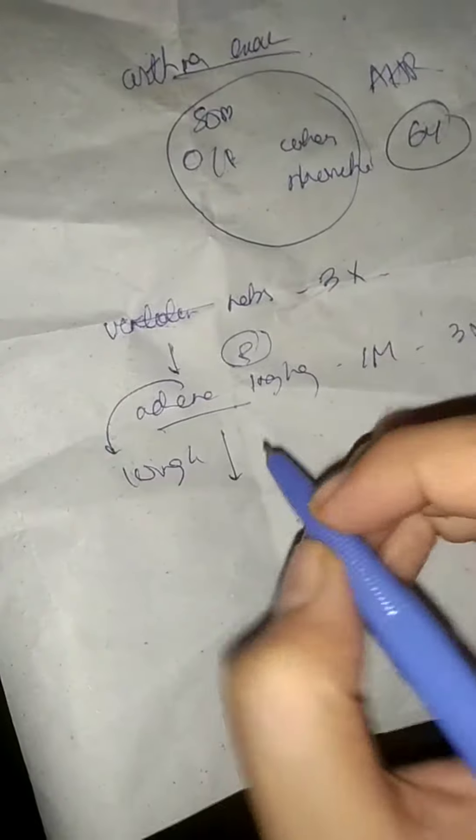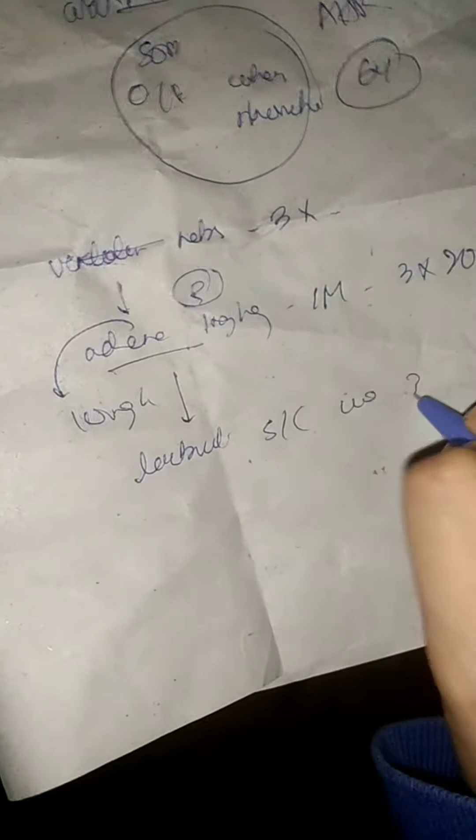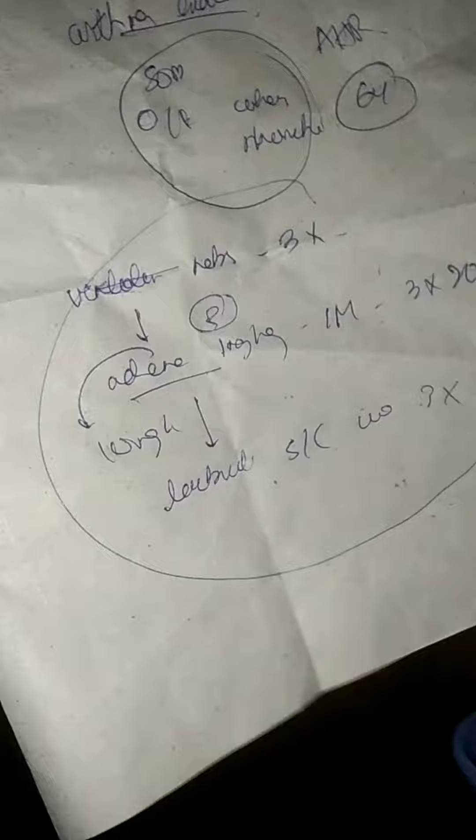Now you have done this. Usually it settles up till here, but if it still doesn't settle, then you are going to go for terbutaline. Terbutaline is also given subcutaneously according to the weight of the patient, three times. Within this regime, if you feel like the patient is getting severe...